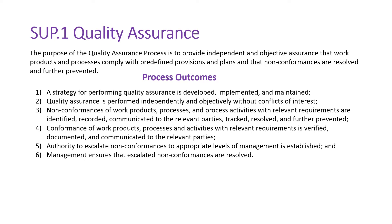So what are the process outcomes for this process area? A strategy for performing quality assurance is developed, implemented, and maintained. Quality assurance is performed independently and objectively without conflicts of interest. Non-conformances of work products, processes, and process activities with relevant requirements are identified, recorded, and communicated to the relevant parties.